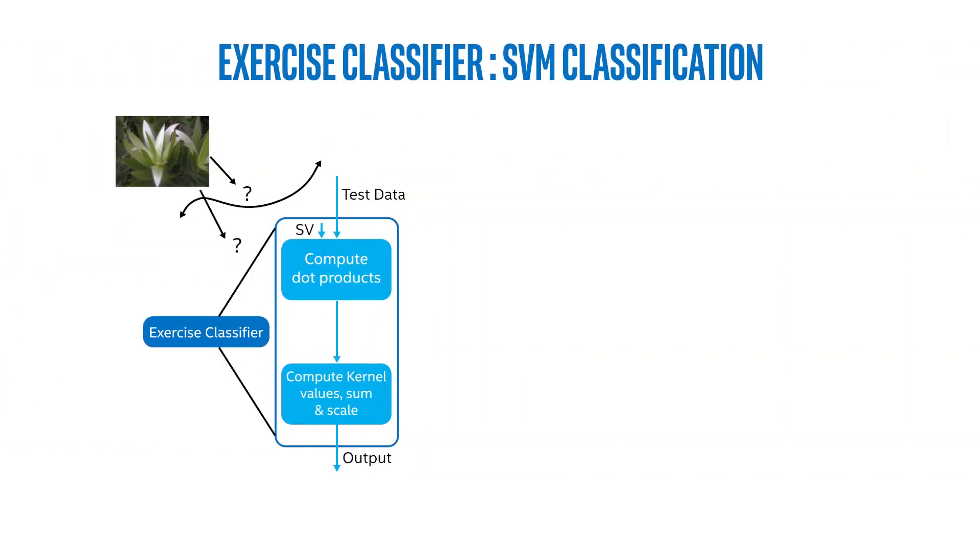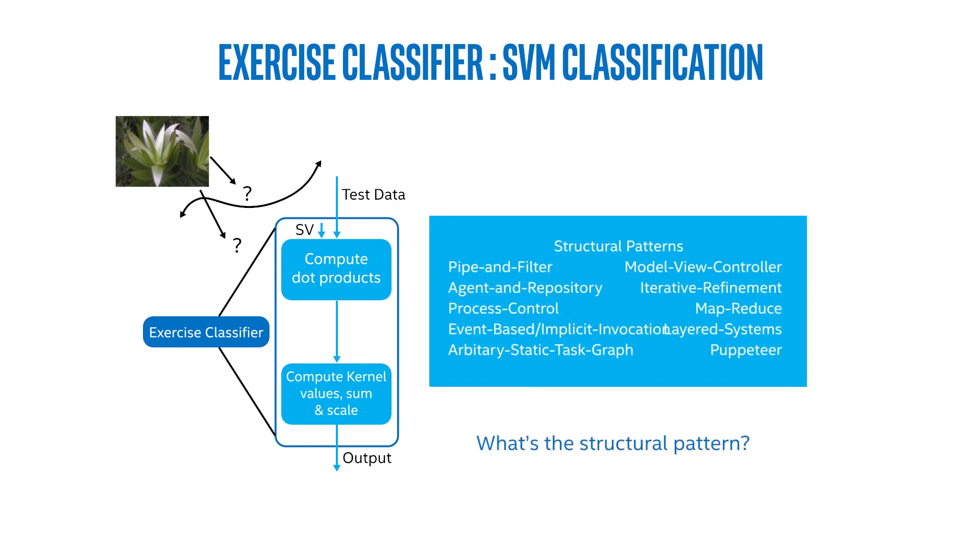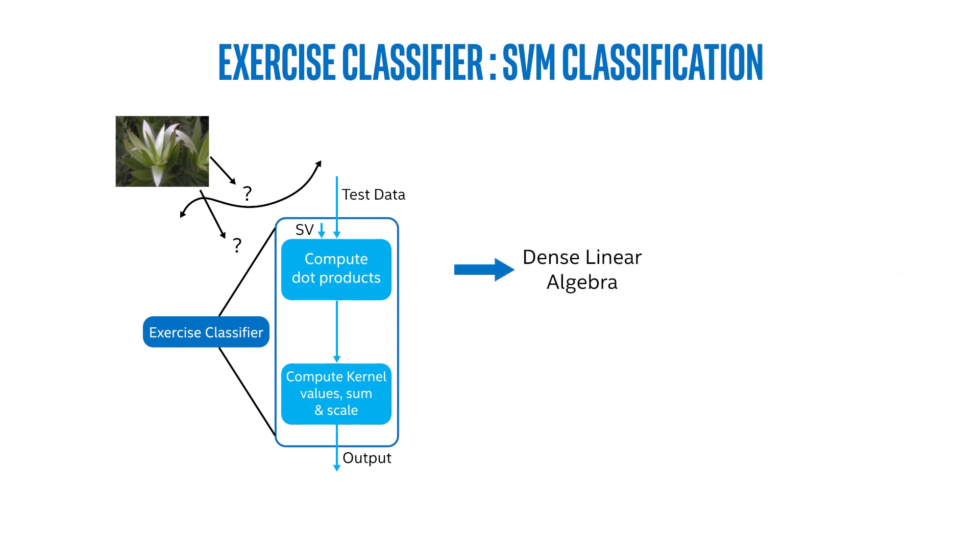Now let's look at the actual exercise in the classifier. What's the structural pattern for this? It's, again, pipe and filter. Looking inside each of the filters of the pipe and filter, we see first we have computing the dot products using dense linear algebra, and second, computing the kernel values, summing, and scaling. This is essentially, when we're exercising the classifier, we're taking a vector in n-space, and we're seeing on which side of the fence did it land. Here, to see which side of the fence it landed, we're looking at MapReduce, with a mapping of dense linear algebra formula.